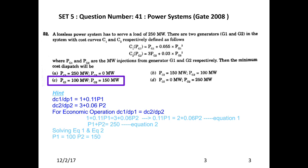First, find the incremental cost for generator 1: dC1/dP1 = 1 + 0.11·PG1, by differentiating. Similarly, incremental cost of generator 2: dC2/dP2 = 3 + 0.06·P2. For economic operation, incremental cost of G1 equals incremental cost of G2. Equating gives one equation, and P1 + P2 = 250 MW gives another. Solving these two equations: P1 = 100 MW, P2 = 150 MW. Choice C is the right answer.